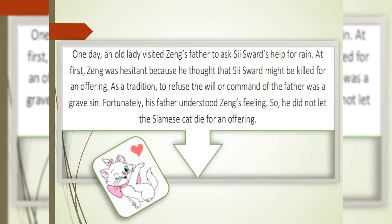One day, an old lady visited Zhang's father to ask Sea Sword's help for rain. At first, Zhang was hesitant because he thought that Sea Sword might be killed for an offering. As a tradition, to refuse the will or command of the father was a grave sin. Fortunately, his father understood Zhang's feeling. So, he did not let the Siamese cat die for an offering.